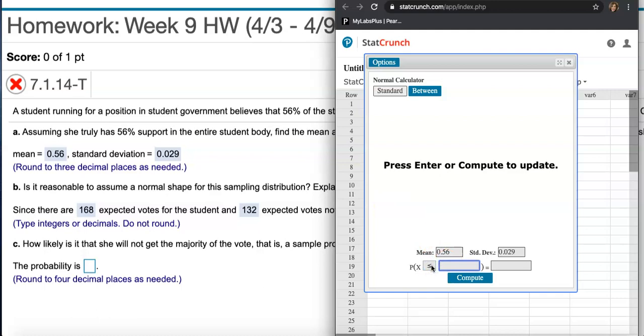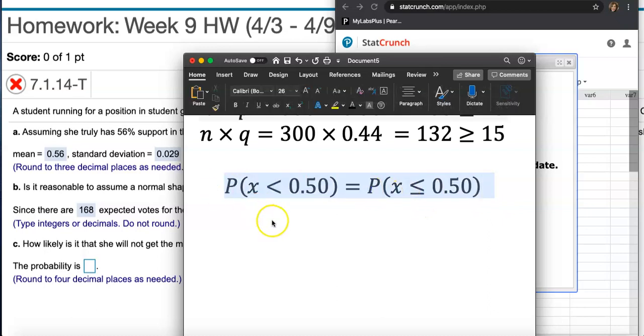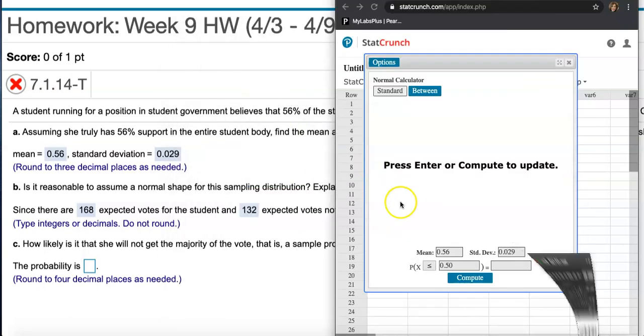Now we want the probability that X is less than 50%, so I typed in X is less than or equal to 0.50. Like I said, it can be less than or less than or equal to because in a normal distribution, in a continuous distribution, chance of it happening at exactly 0.5 we assume that to be zero.